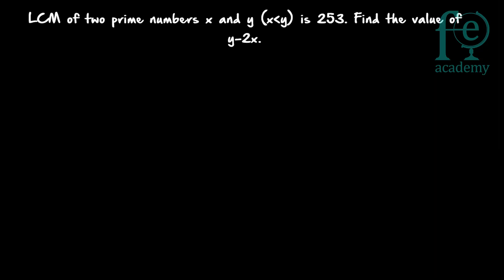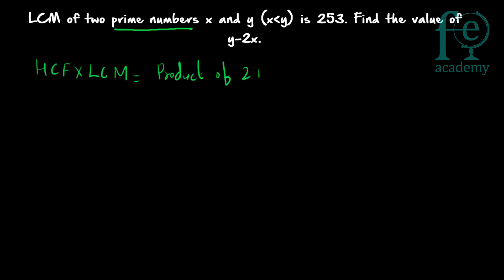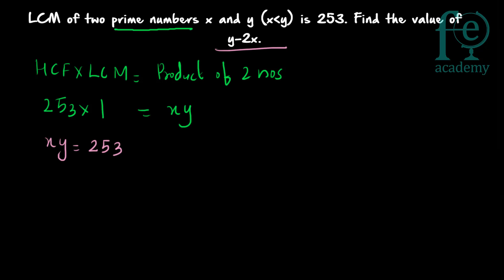Now question number 2. The LCM of 2 prime numbers x and y is 253, and x is less than y. Find the value of y minus 2x. Since x and y are prime numbers, their highest common factor is equal to 1. You know that HCF × LCM equals the product of the numbers. Here LCM is 253 and HCF is 1, so x × y = 253. Your aim is to find out x and y so you can find y minus 2x.